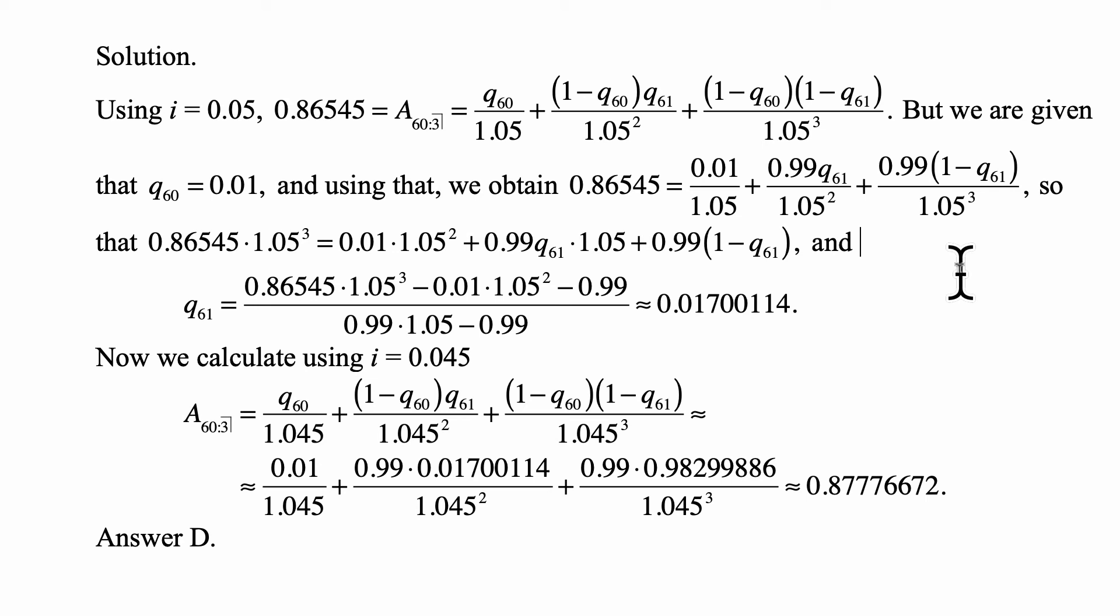Now we calculate using i equal to 0.045. A60 colon angle 3 is Q60 over 1.045 this time, not 5% but 4.5%,